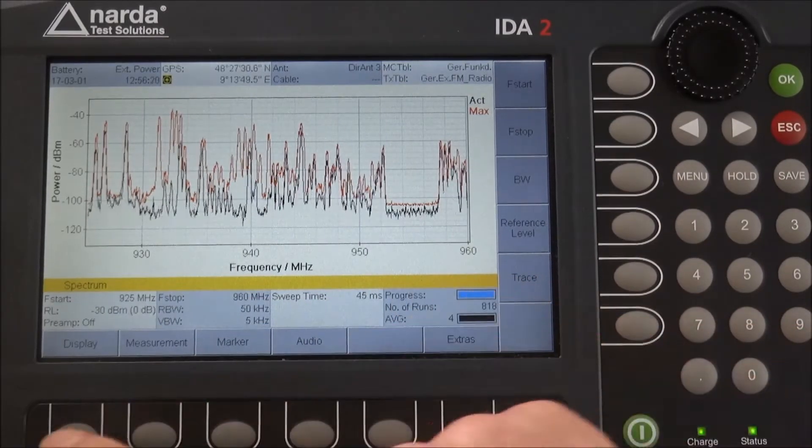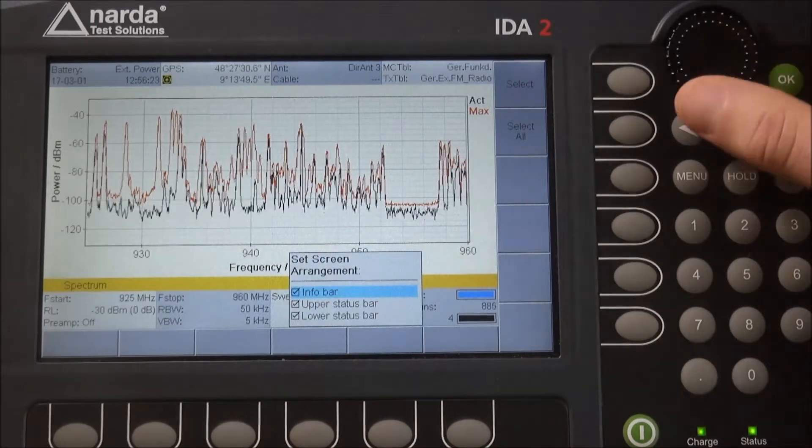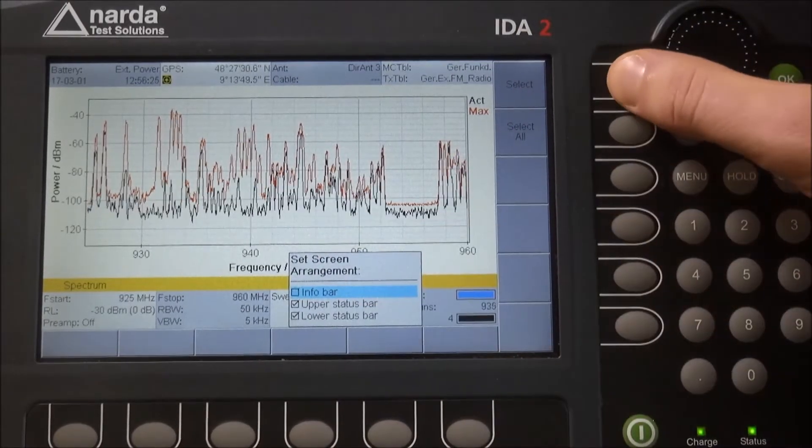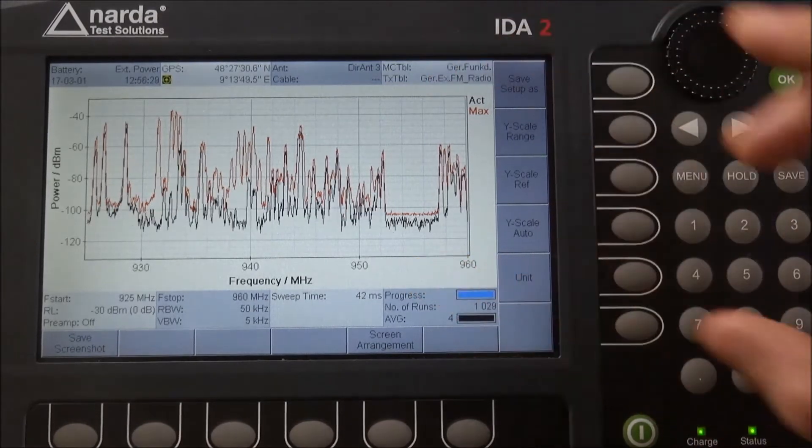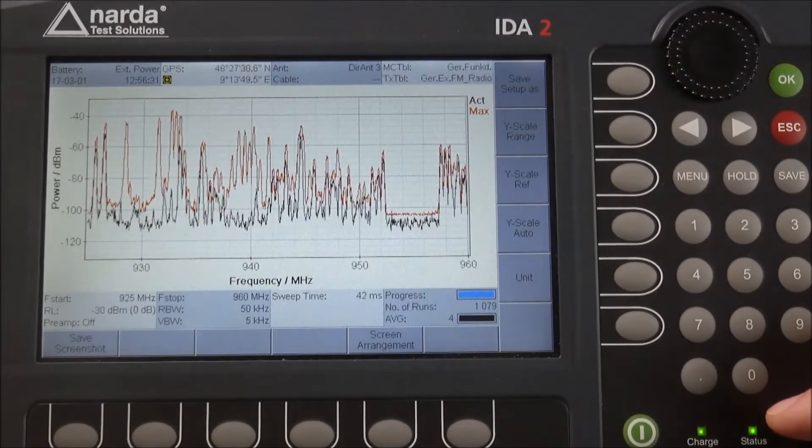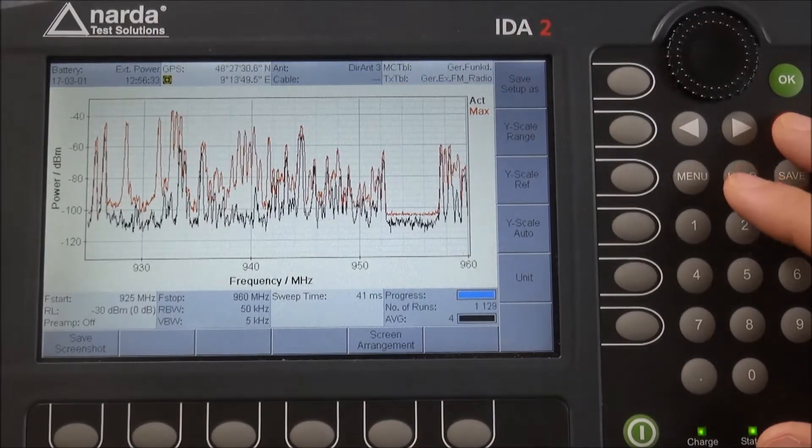When you click on display screen arrangement, you can just unselect this one here, and by that you can slightly enlarge your view on the spectrogram or on the spectrum. As you can see now, we're still in the display menu.